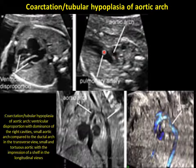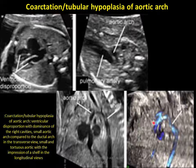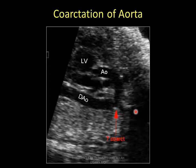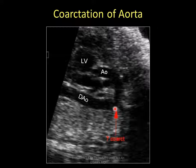This is the aortic arch; this is the pulmonary artery. The aortic arch is small. Coarctation of the aortic arch with impression of a shelf in the longitudinal view. Coarctation of the aortic arch is very evident — aorta, arch, and the origin of the circumflex. After this, decreased narrowing of the aorta is evident.